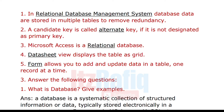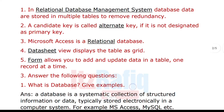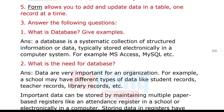Number three: MS Access is a relational database. Number four: this view displays a table as a grid of rows and columns — that is datasheet view. Number five: a form allows you to add and update data in a table one record at a time.